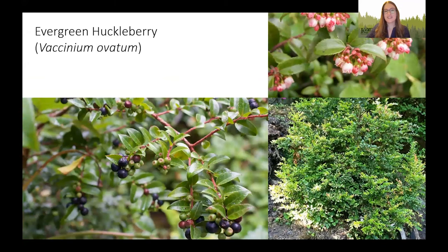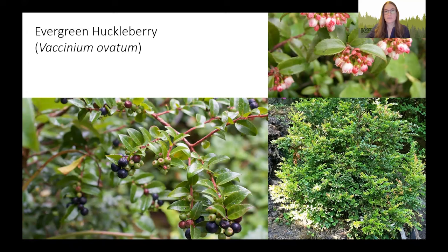Next, evergreen huckleberry — another evergreen shrub, as the name suggests. It grows cute little pink flowers that turn into berries ripening during August or September. They attract many birds and mammals and are a favorite for people who enjoy eating them straight off the bush or using them to make jams, pies, or syrup. It's beautiful year-round and tasty.